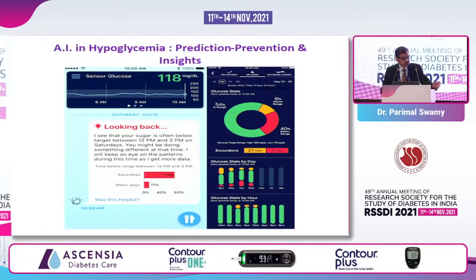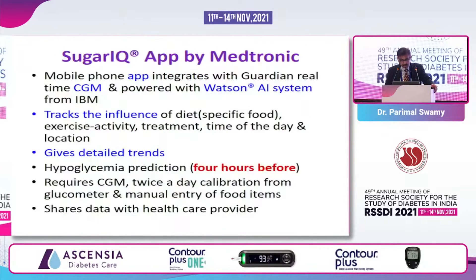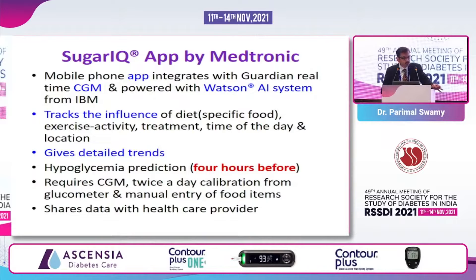The initial AI hypoglycemia apps running through the smartphone did basic data crunching — they classified the data and the action was left to the human being, the patient or the healthcare provider. But with time, the FDA-approved technology used in the SugarIQ app by Medtronic was integrated with CGM data and the Watson AI system from IBM. It tracks the influence of diet, exercise activity, treatment, time of day, and even location, giving detailed trends. Most importantly, it can give a hypoglycemia alarm hours before it occurs.